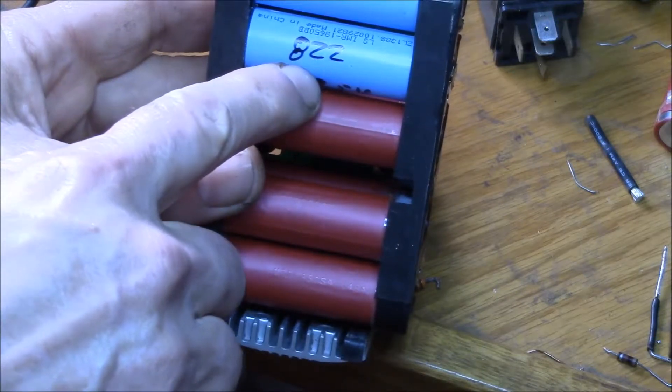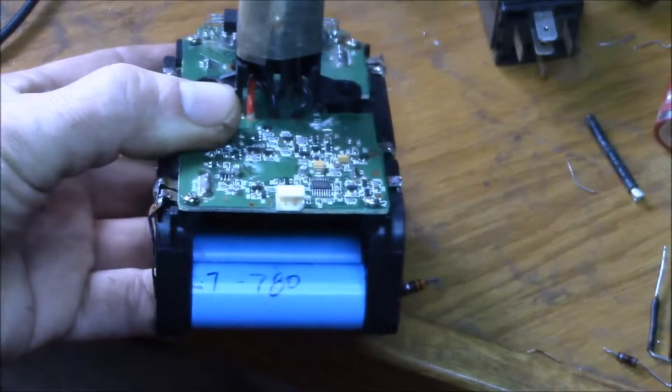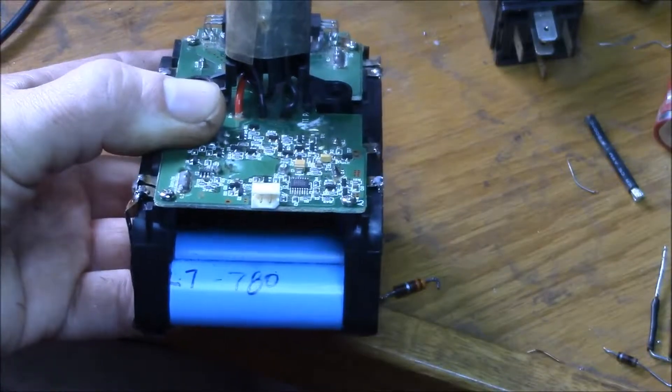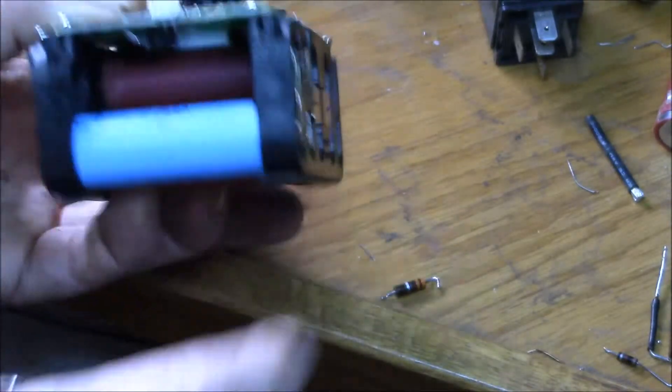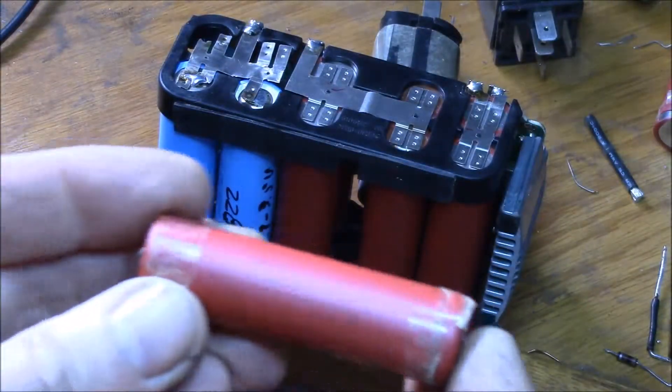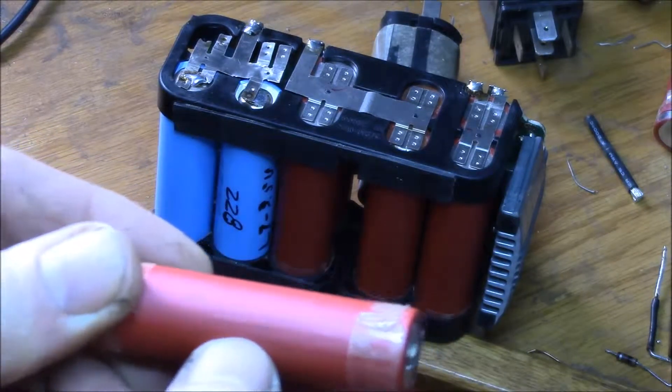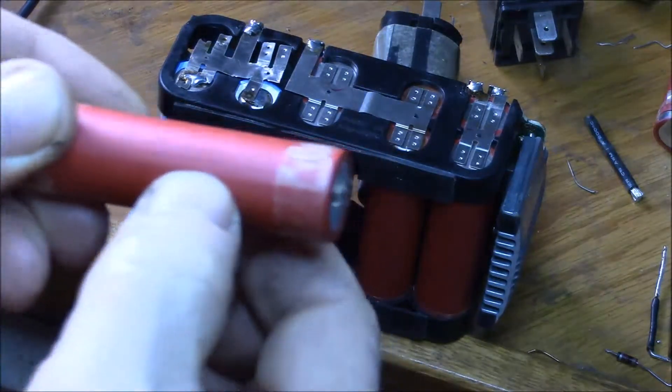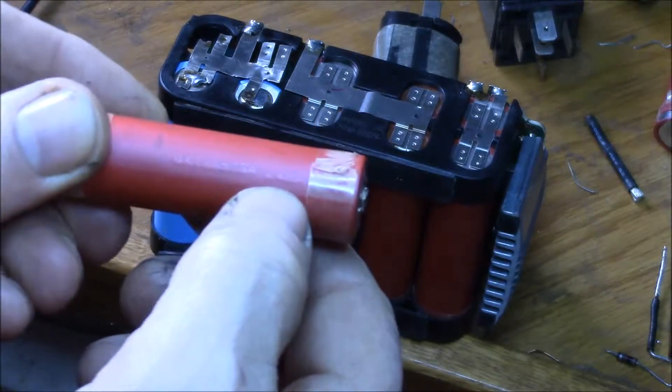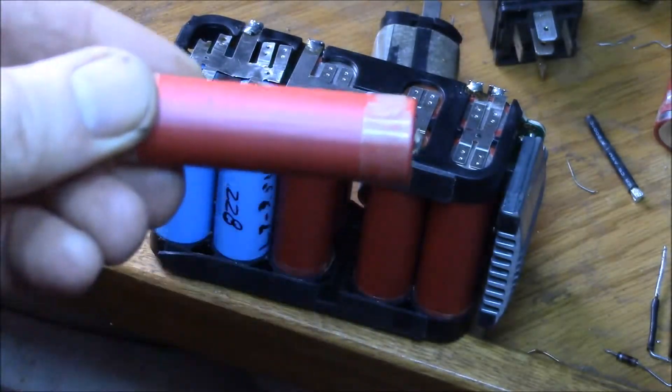These were the ones that tested out the lowest. I think this one was 822 milliamp hours, and then that cell there tested out at 780. So these were my two weakest cells. It's a Sanyo cell, 18650 SA, and then an L48A. It's just an embossing on the heat shrink.